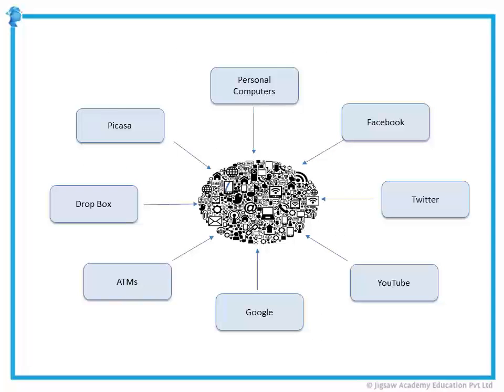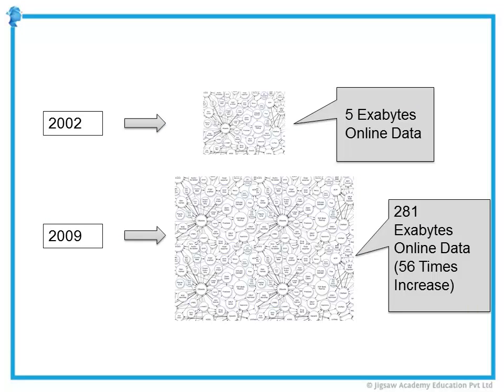If you think of the world around you, there is an enormous amount of data generated, captured and transferred through various media within seconds. This data may come from a personal computer, social networking sites, transaction or communication systems of an organization, ATMs and multiple other channels. Some reports have recorded that in 2002 there was an estimated 5 exabytes of online data in existence. Each exabyte is a massive 1 million terabytes of data. By 2009, the number had risen to 281 exabytes — a 56 times increase — and this number has multiplied exponentially post 2009.